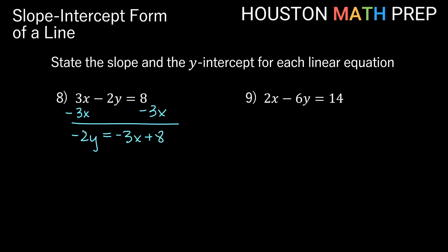Now we want to get rid of the times negative 2, so we divide by negative 2 — divide every term by negative 2. We get y equals: negative divided by a negative gives us a positive, so we get positive 3 halves x. And positive 8 divided by negative 2 gives us minus 4.